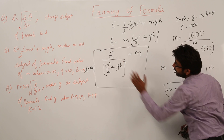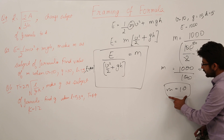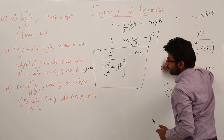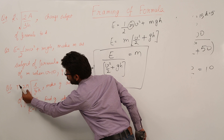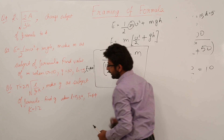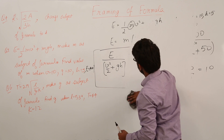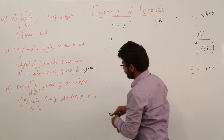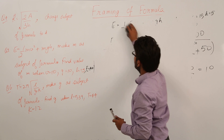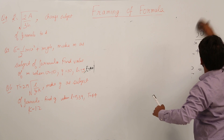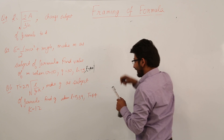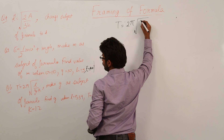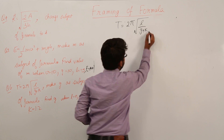The answer to the first part is m equals e divided by (v squared by 2 plus gh), and the answer to the second part is m equals 10. Now let us see our sixth question: t equals 2π under root of l divided by g plus k. We have to make g the subject of the formula.